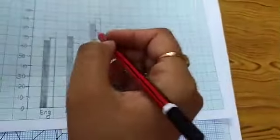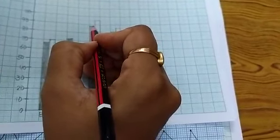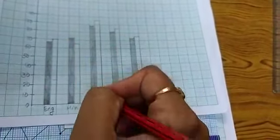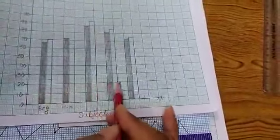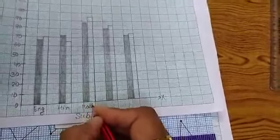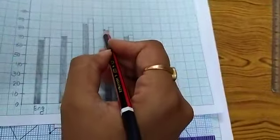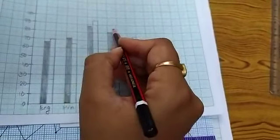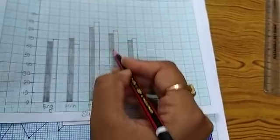Now, next, Maths. In Maths, first term, he scores 88 marks. Here we will mark 88 marks. And second term, we will mark 95 marks. And join them. This is Maths. Next, Science. In first term, 81 marks, and in second term, 85 marks.